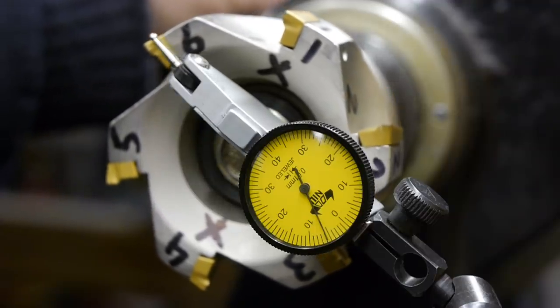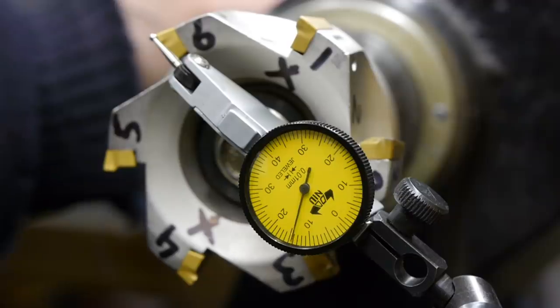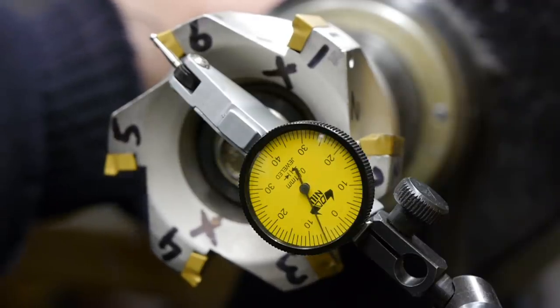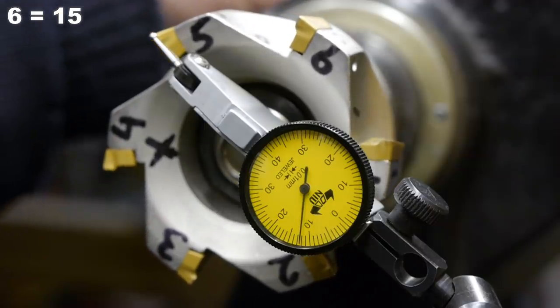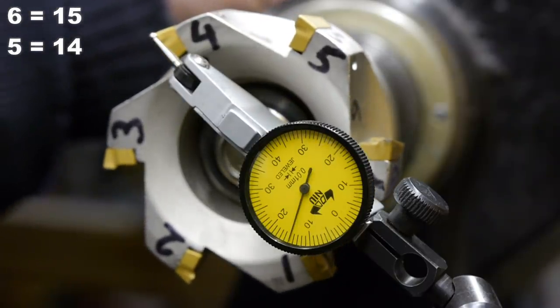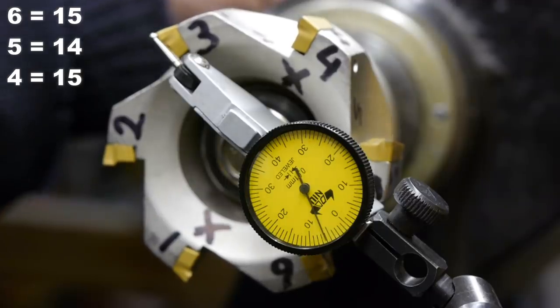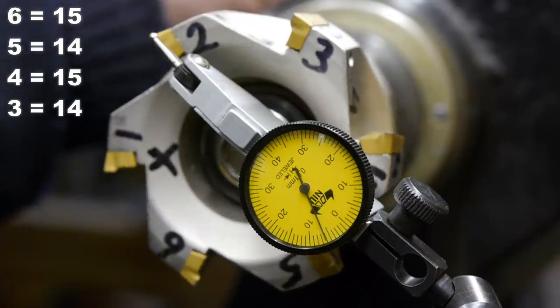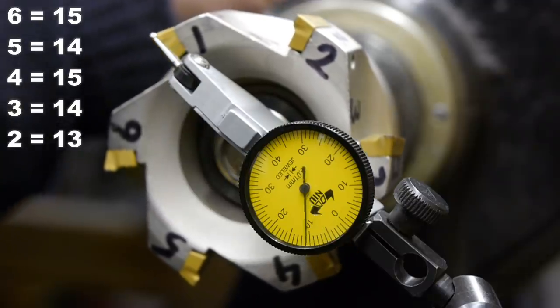I'm running the spindle in reverse so the test indicator can ramp up on the insert. I don't have a perfect angle, but that looks like 50. Number six, 15. Number five, 14. Number four, 15 again. Number three, 14, maybe a bit less. Number two, and that's a bit lower, 12 maybe 13. And number one, 11-ish.